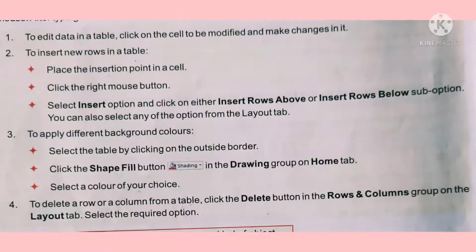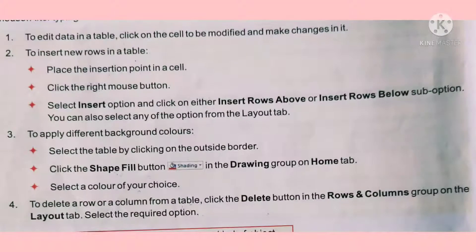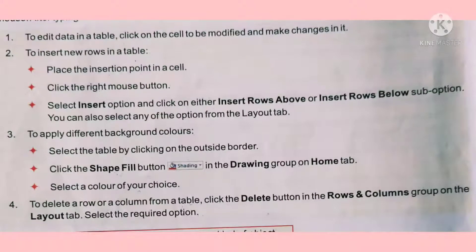To apply a different background color, select the table by clicking on its outside border. Then click the shape fill button in the drawing group on the home tab. A color palette will appear — select your desired color and it will be applied as the background.